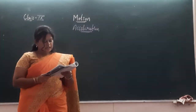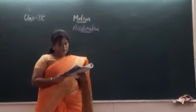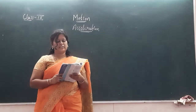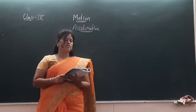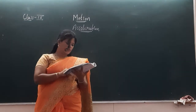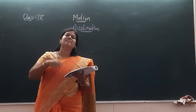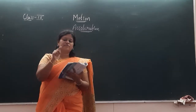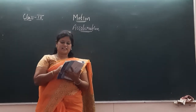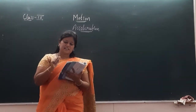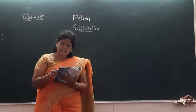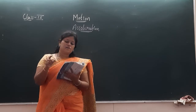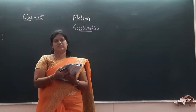The question is: Starting from a stationary position, Rahul pedals his bicycle to attain a velocity of 6 meter per second in 30 seconds. Then he applies brakes such that the velocity of the bicycle comes down to 4 meter per second in the next 5 seconds. Calculate the acceleration of the bicycle in both cases.